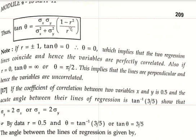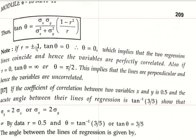If r equals 0, dividing by 0 gives infinity, so tan theta equals infinity, which equals tan(pi/2). Therefore theta equals pi/2, meaning the lines are perpendicular, and hence the variables are uncorrelated. We conclude: if r equals plus or minus 1, variables are perfectly correlated; if r equals 0, variables are uncorrelated.